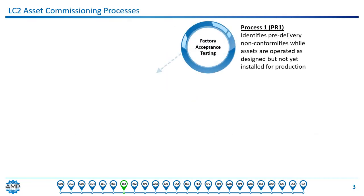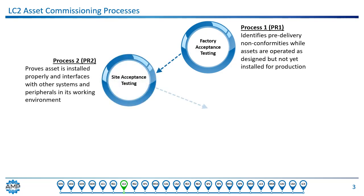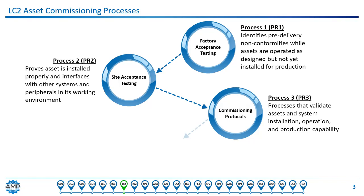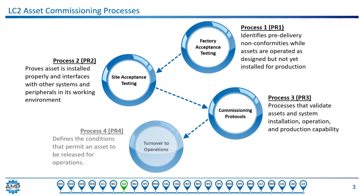There are four processes associated with asset commissioning. The first is factory acceptance testing, which identifies pre-delivery non-conformities while assets are operated as designed but not yet installed for production. The second is site acceptance testing, which proves that an asset is installed properly and interfaces with other systems and peripherals in its working environment. Commissioning protocols, the third process, validates assets and system installation, operation, and production capability. And finally, process four, which is turnover to operations, defines the conditions that permit an asset to be released for operation.